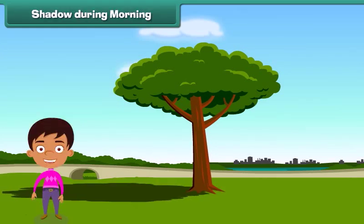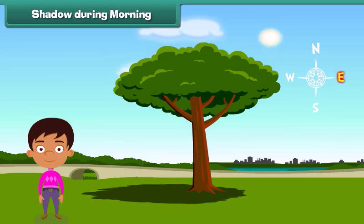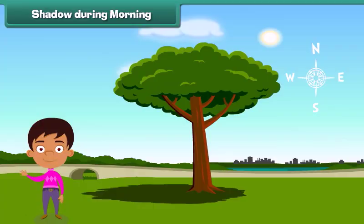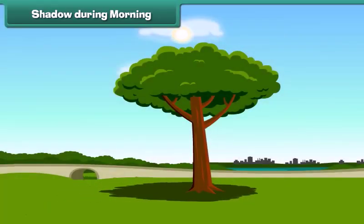As we all know, the sun rises in the east. In the morning, the sun is in the east, so the shadow of the object forms in the west. Now just look at its length. The length of the shadow changes as the sun moves to its west.